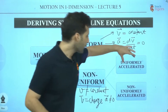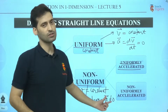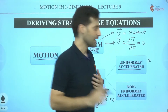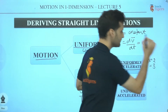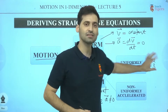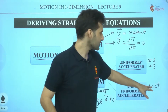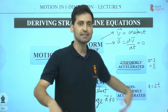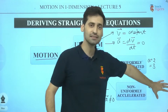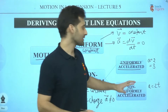Non-uniform motion further gives us two cases: one is Uniformly Accelerated and the other is Non-Uniformly Accelerated. Uniformly Accelerated means acceleration is constant but not zero. For example, if acceleration is 2 m/s² or 3 m/s², these are constants. But if acceleration is 2t — where t is time — and I change the time, the acceleration changes, so that is Non-Uniformly Accelerated, meaning acceleration is not constant.